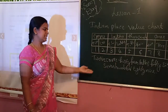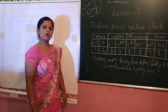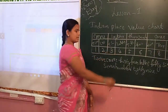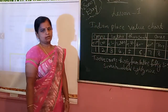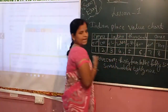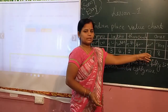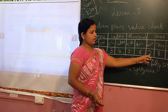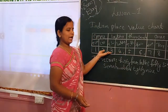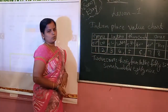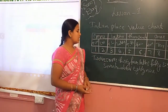Yes, it is read like this: 12 crores, 34 lakhs, 56,789. Starting from the right side, leave the first three places — ones, tens, and hundreds. After that, leave two places — thousands and ten-thousands. Then lakh and ten-lakhs, then crore and ten-crores. So the number is: 12 crores, 34 lakhs, 56,789.